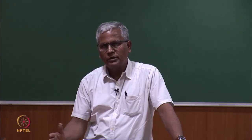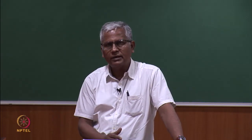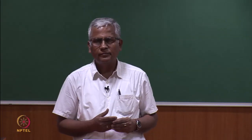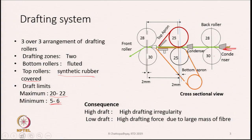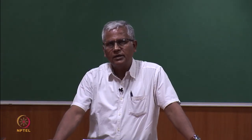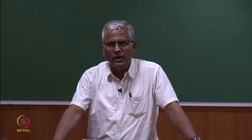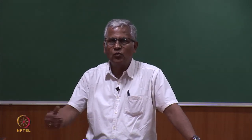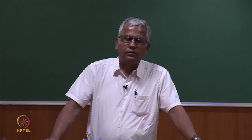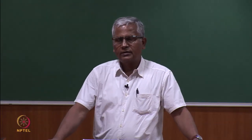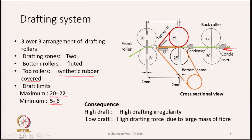Qualitatively, high draft means more irregularity. At the same time, very low draft leads to high drafting force due to the large mass of fiber — a sliver contains much more fibers than a yarn. A roving is 20 to 30 times thicker than a yarn, meaning there are 20 to 30 times more fibers in the roving cross-section. More mass means more force at low draft, which may also lead to irregularity. When discussing irregularity generating mechanisms, we will explain how irregularity is generated.